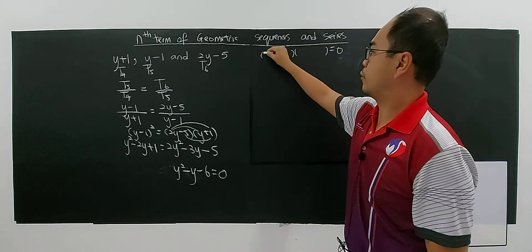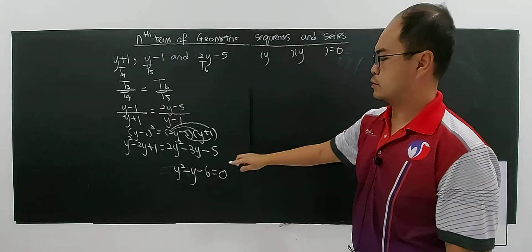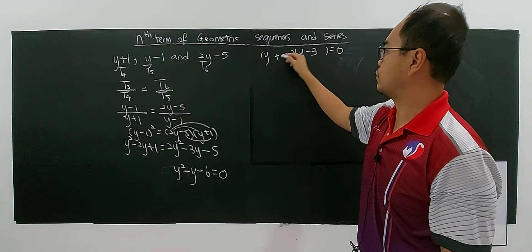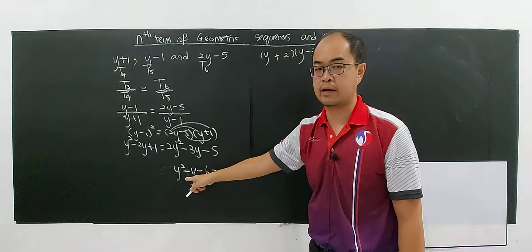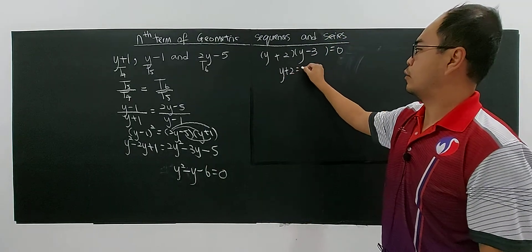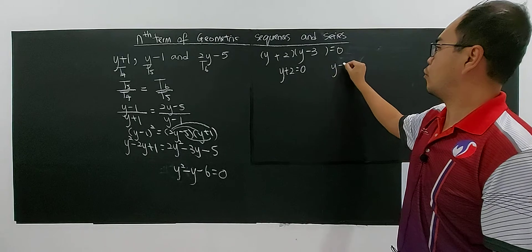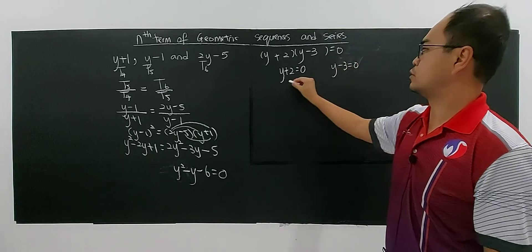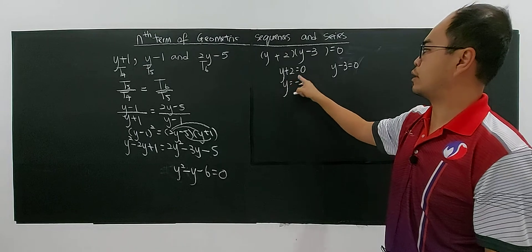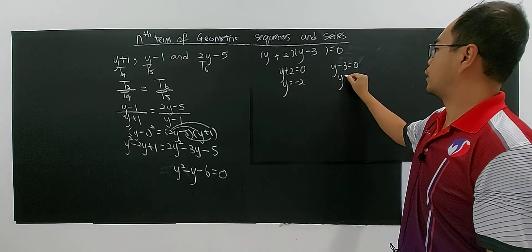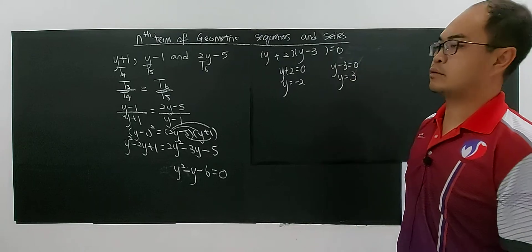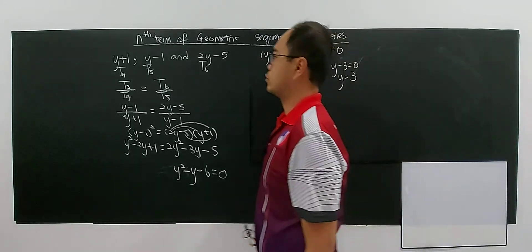Factorizing y² minus y minus 6 equals 0, you need factors of negative 6: that's negative 3 and positive 2, since negative 3 plus 2 equals negative 1. So you have y plus 2 equals 0 or y minus 3 equals 0. Therefore y equals negative 2 and y equals 3. You have 2 possible values of y.